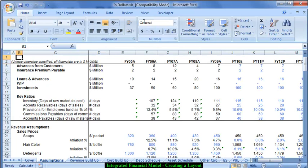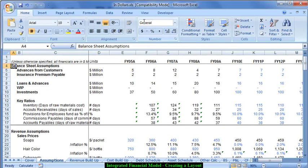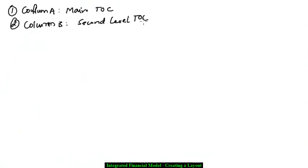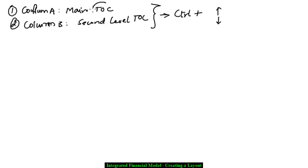The main advantage of doing this is that I can always use the shortcut control plus either the up arrow or the down arrow to navigate from one main table of content to the other. This sort of improves the efficiency of navigating through the model.